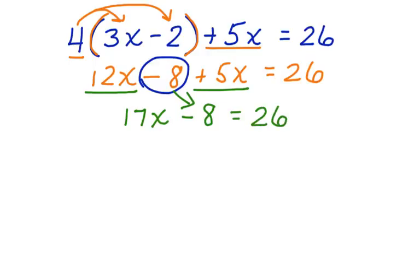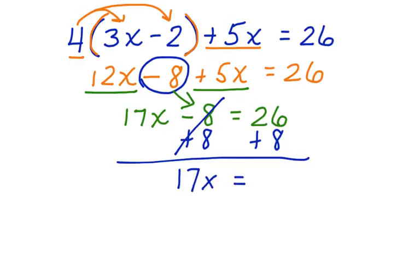Now look at the equation we have. We have a two-step equation. We can add 8 to both sides. Minus 8 plus 8 cancels, bring down the 17x, equals 26 plus 8, which is 34.